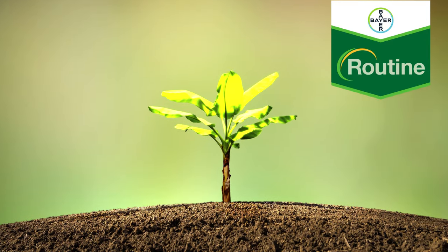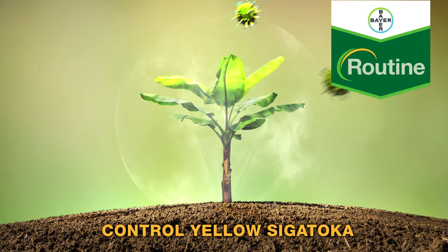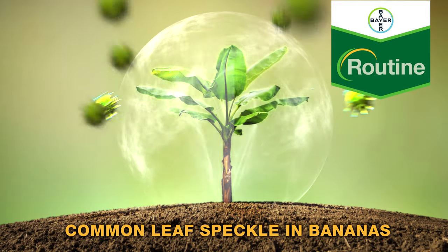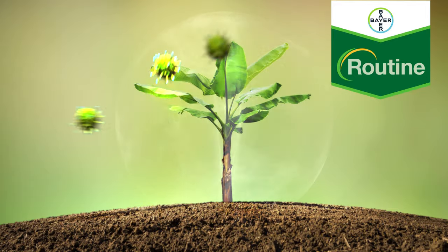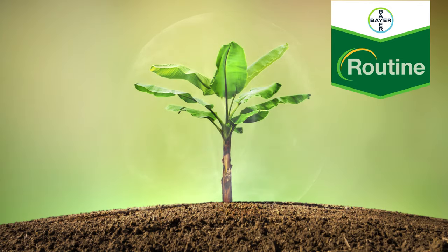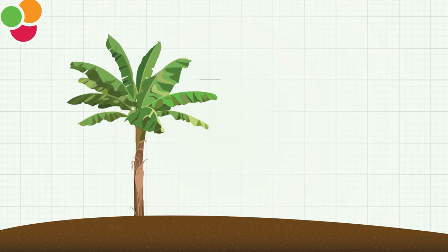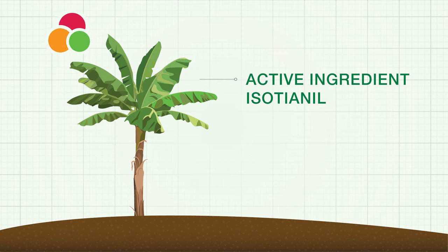Routine 200 SC fungicide is a unique product offering control of yellow sigatoka and common leaf speckle in bananas, and provides growers with several benefits for banana disease management. Routine contains the active ingredient isotinyl.